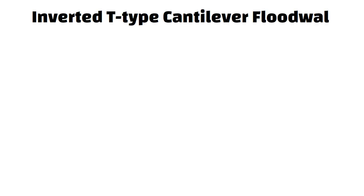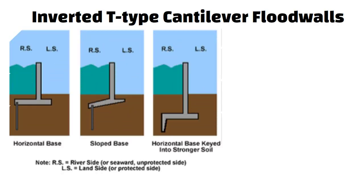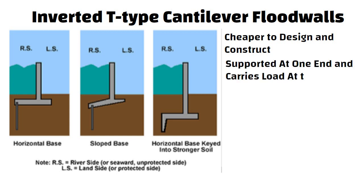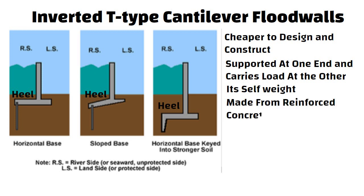Inverted T type cantilever flood walls. It is cheaper to design and construct. The cantilever of the flood wall is a projecting structure like a beam that is supported at one end and carries a load at the other. The stability is achieved partially from the weight of the soil on the heel portion of the base of the T type cantilever and its self weight. Usually it is made from reinforced concrete.